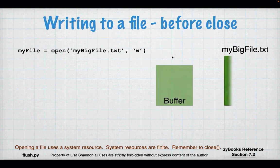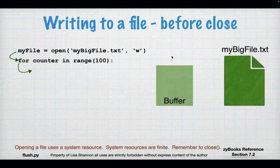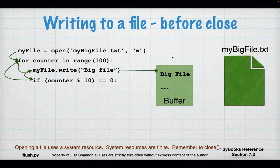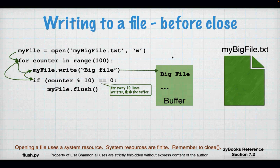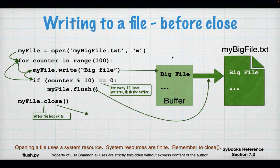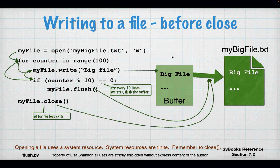So what if I'm processing a lot of data? What if I'm going to have a big file? Well, there are other ways to manage that buffer. Once you open a file — this is just a for loop, just a way to create a big file — I'm going to write big file a hundred times to my buffer. But let's say every tenth time I want to flush the buffer and write it to the file. So I'm going to say my file.flush. Flush says, hey Python, clear the buffer and write everything to the file so I don't miss anything. If my program crashes, at least those ten writes are actually written to disk. And you still have to close it after the loop exits, because no matter how many times you flush, you have to still return the file descriptor.